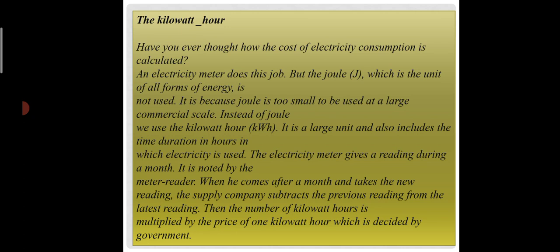The kilowatt-hour is a larger unit which includes the time duration in hours in which electricity is used. The electricity meter gives a reading during a month, so we can know how much units are consumed by different electrical appliances working in different hours. When the meter reader comes after the month and takes the new reading, the supply company subtracts the previous reading from the latest reading.